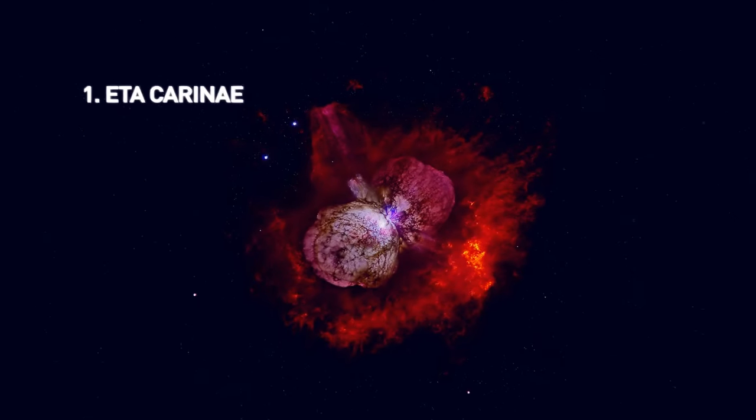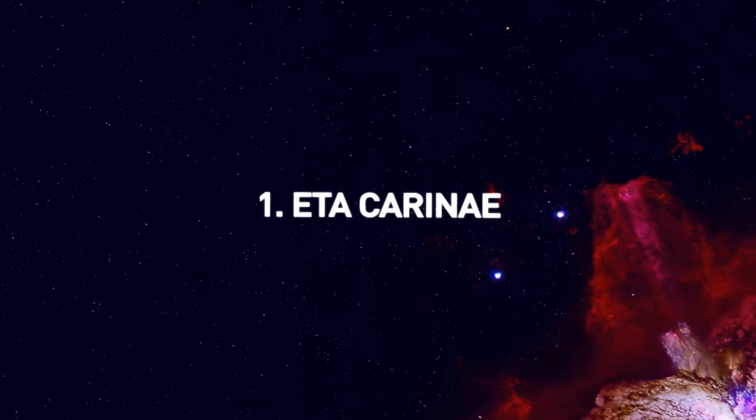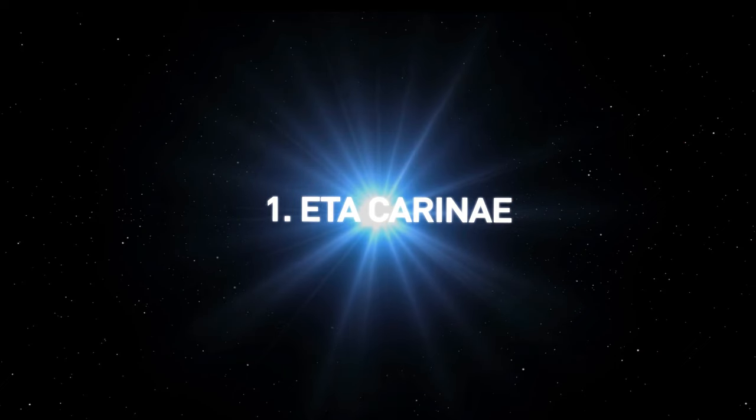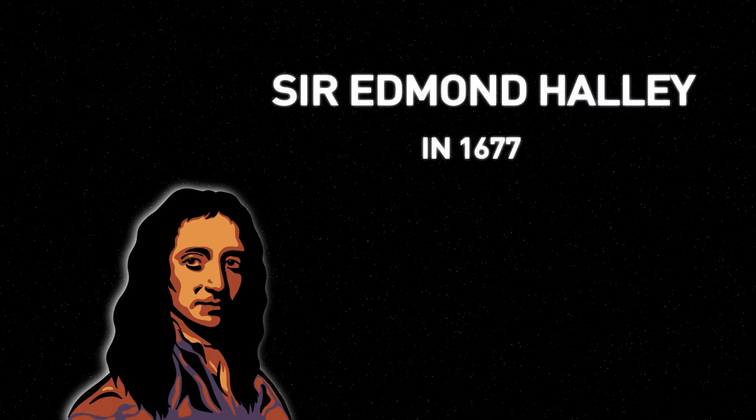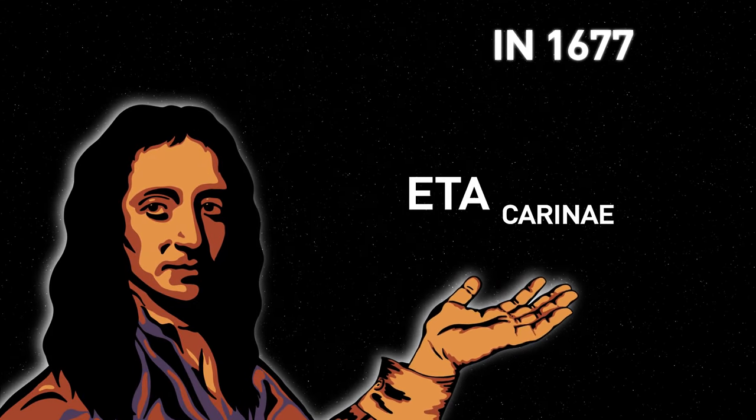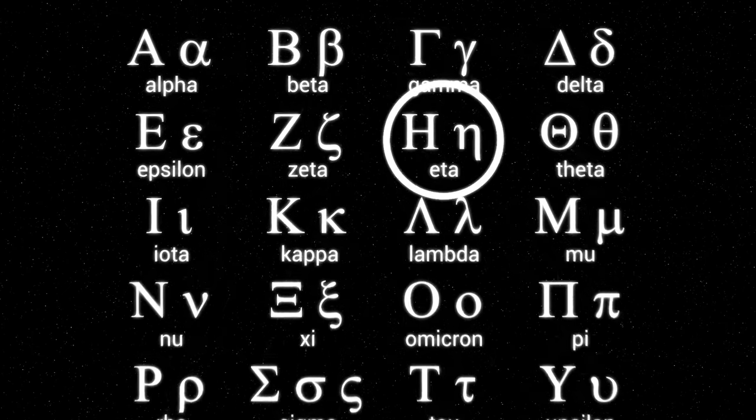At the top of the list must be the southern hemisphere's star, Eta Carinae. Greek letters before the name of the constellation indicate the rank of the star's brightness in that constellation. Sir Edmund Halley, in 1677, recorded Eta Carinae as the seventh brightest star in the constellation Karina, Eta being the seventh letter in the Greek alphabet.